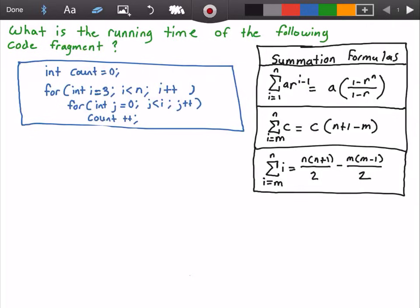Next, within that outer for loop, we have our inner for loop which states that j equals zero, and it runs while j is less than i, so it never reaches i. And then we have j plus plus, which means that j increments by one each time.